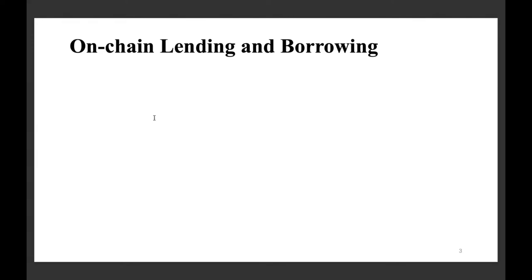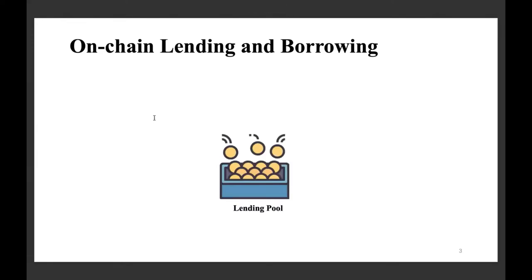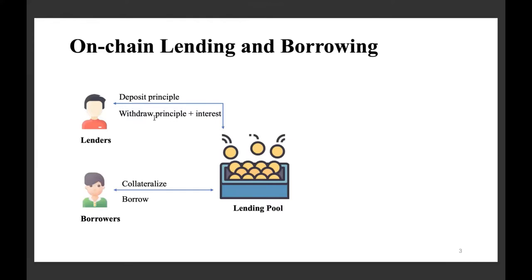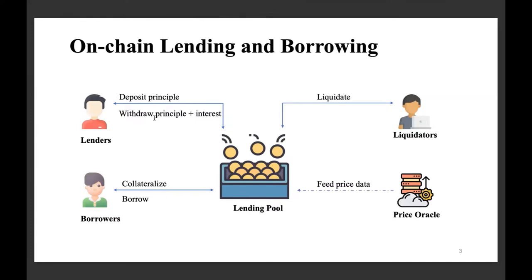In this work, we will focus on on-chain lending and borrowing. There are different actors and components in a lending platform. First is the lending pool, which is governed by smart contracts. There are also lenders who deposit their assets into the lending pool and can choose to withdraw the assets after some time, gaining interest. There are also borrowers who collateralize one token to borrow another token. There are also liquidators who monitor the state of borrowers and liquidate those positions once they become unhealthy. And there is a price oracle which provides price data to the lending pool.